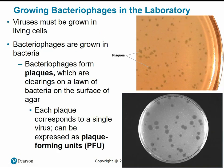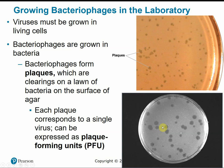To grow viruses in the laboratory, they must be grown in living cells because they are obligate intracellular parasites. Bacteriophages are grown in bacteria — a lawn of bacteria on a plate is treated with bacteriophage viruses, which form plaques or clearing zones on the surface of the agar wherever the virus has killed the bacterial cells. Each plaque corresponds to a single virus, expressed as a plaque-forming unit.